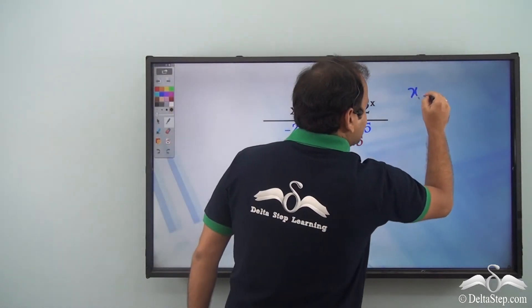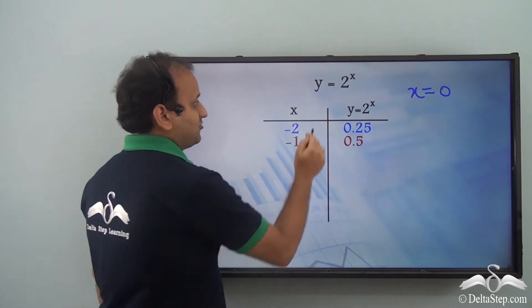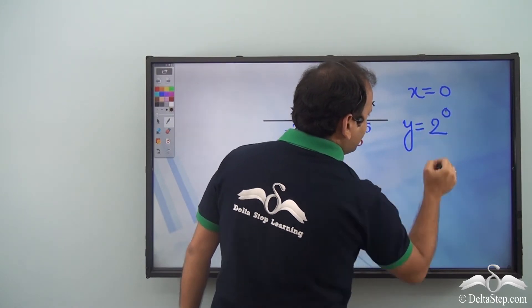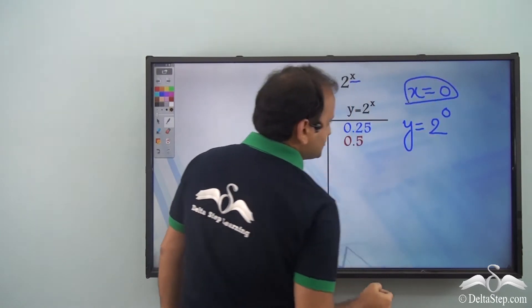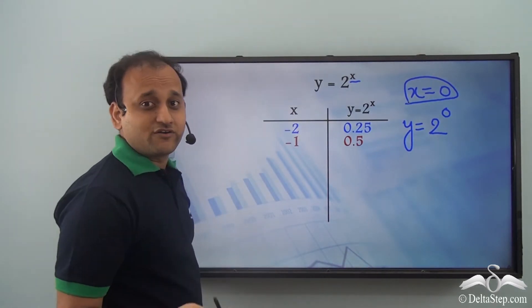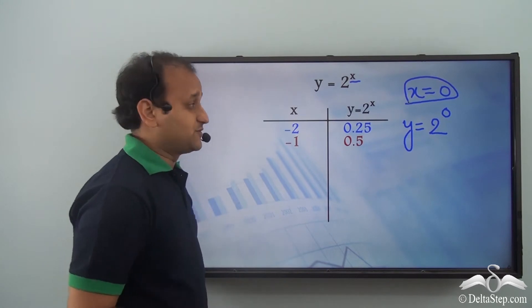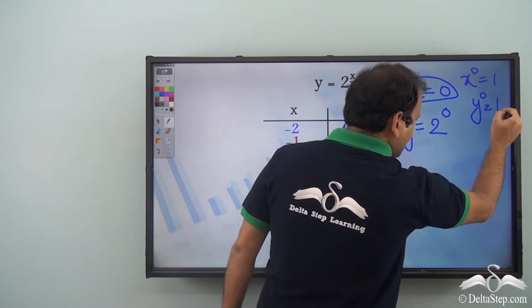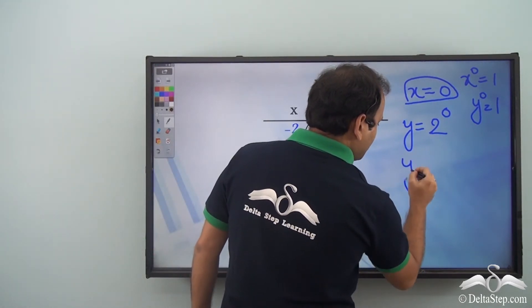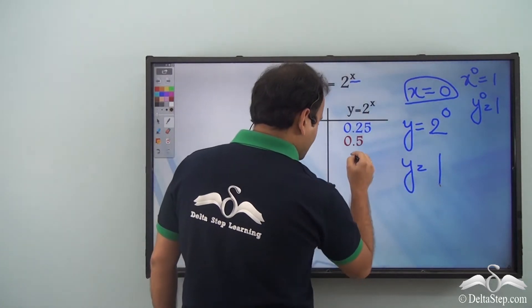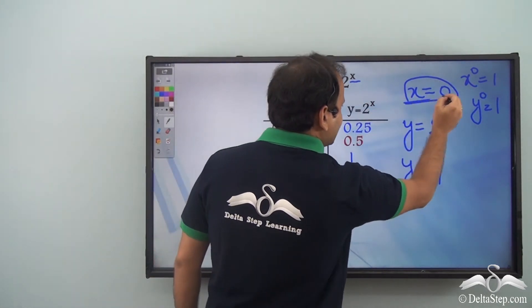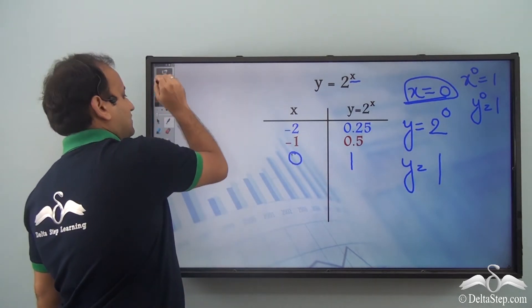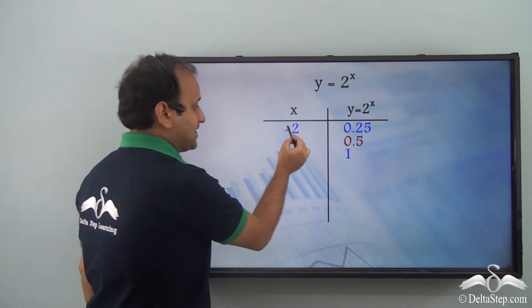Next, let's take x as 0. Then y equals 2 to the power of 0. An important property of exponents is that anything to the power of 0 is always 1 — if x to the power of 0, y to the power of 0, the value is always 1. So 2 to the power of 0 is 1. We find y equals 1 when x is 0.